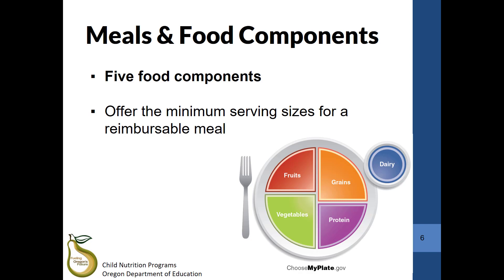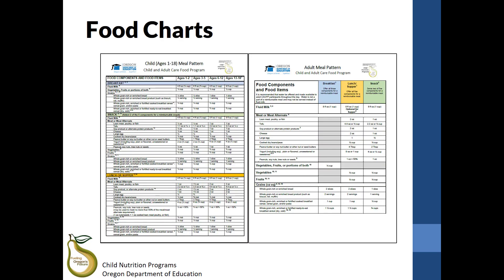As always, the minimum serving sizes for each age group should be served for a reimbursable meal. Refer to the child and adult food charts for serving size requirements for each age group, food component, and meal or snack. The chart on the left of the slide is for the child meal pattern, and the chart on the right is for the adult meal pattern. This food chart can be found on the ODE CNP CACFP meal pattern and menu planning webpage.